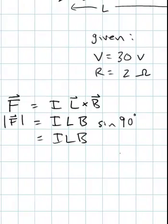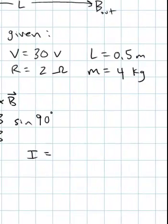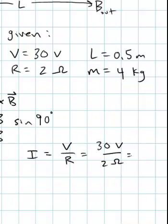So that's just I L B. And what do we have? First we have to find the current. We know V is equal to I R. So I is V over R. And we've got 30 volts and 2 ohms. So what is that? 15 amps.